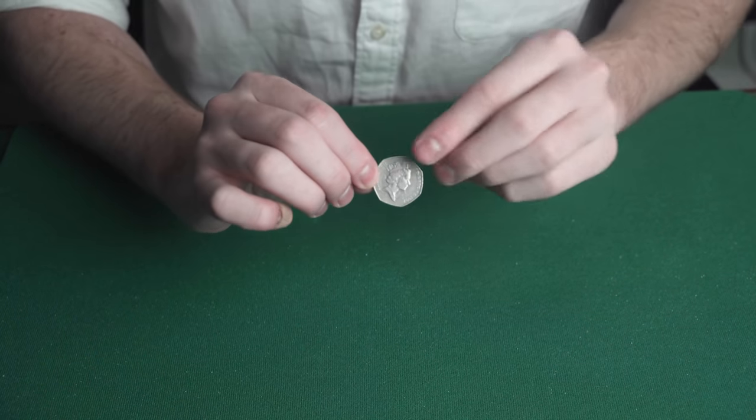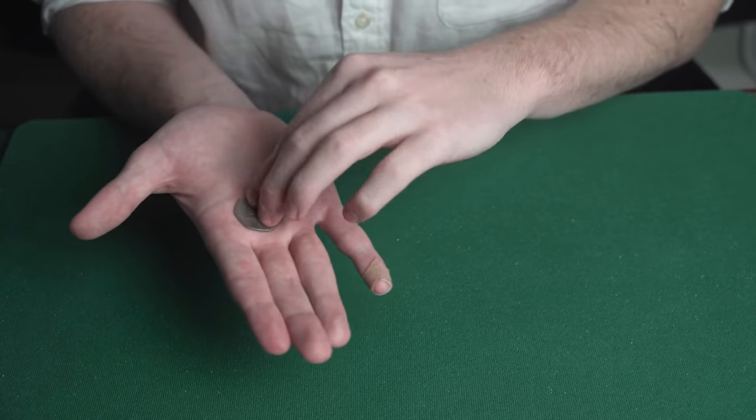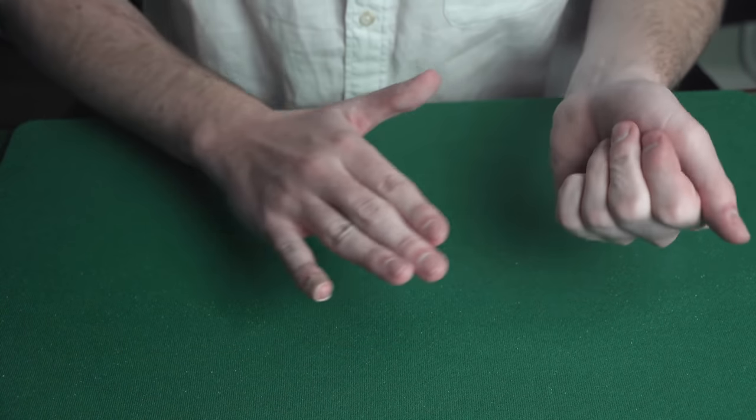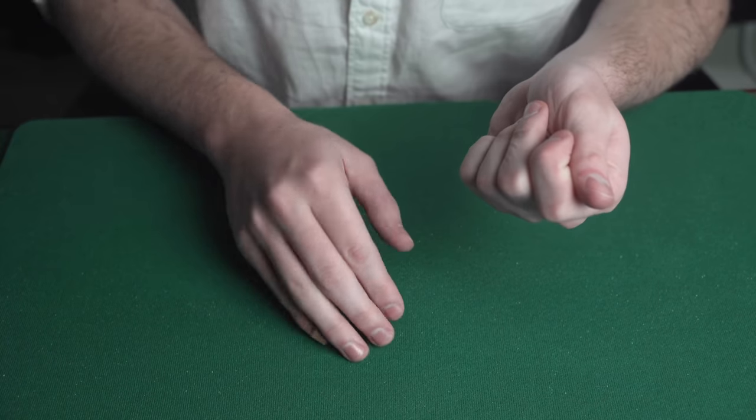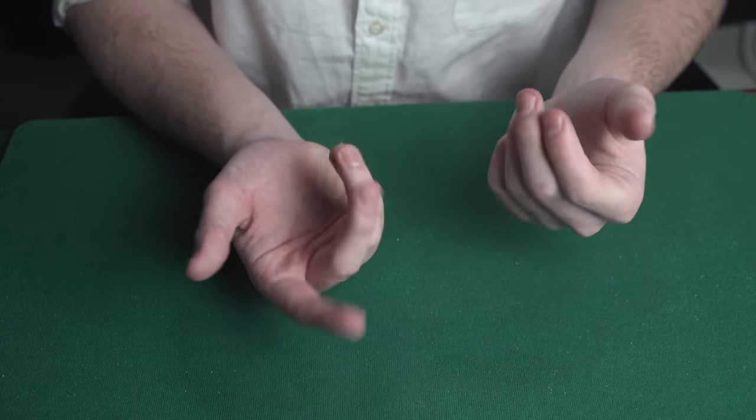This is the cleanest vanish you'll ever see. The magician places a coin in his hand and tosses it into his other hand and the coin is gone.